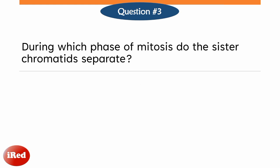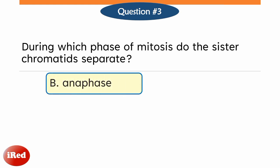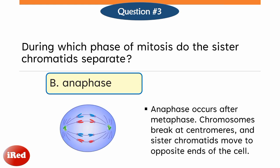The correct answer is letter B, anaphase. Anaphase occurs after metaphase. Chromosomes break at the centromeres, and sister chromatids move to opposite ends of the cell.